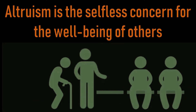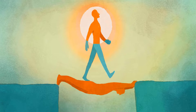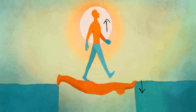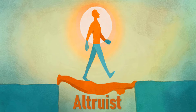Altruism is the selfless concern for the well-being of others. In biology, altruism refers to behavior by an individual that increases the fitness of another individual while decreasing the fitness of the individual performing the act. The individual performing the act is called the altruist, and the individual benefiting from the act is called the recipient.